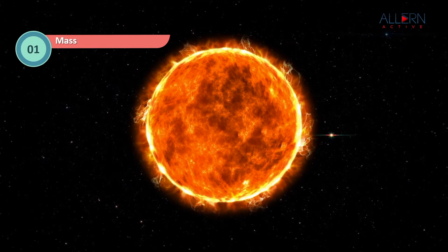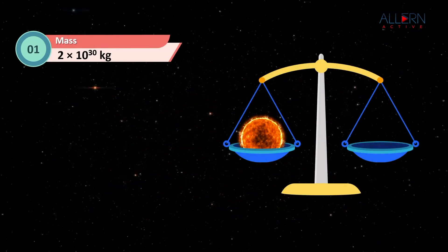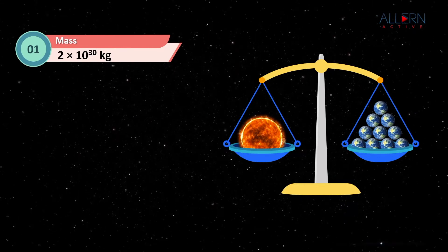The mass of the Sun is 2 × 10^30 kg, which is about 3.3 lakh times that of the Earth.